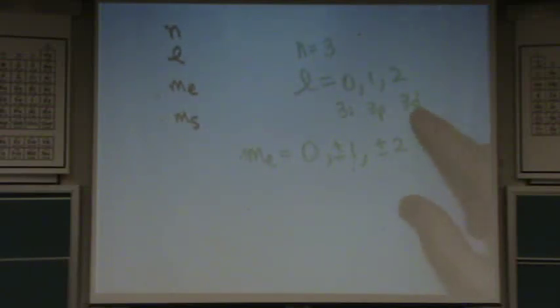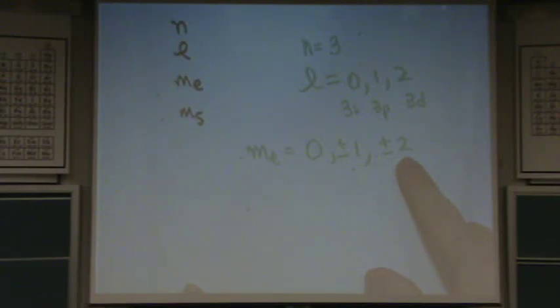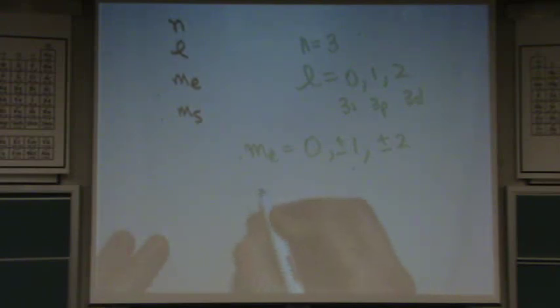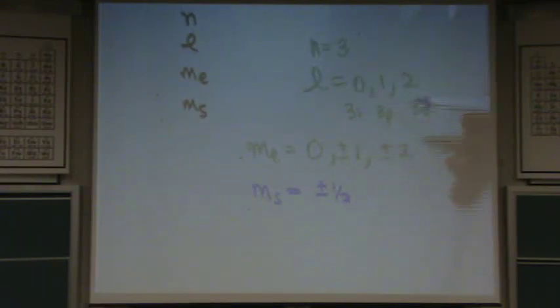How many, if I would have had three D, all these values, there's five values, how many total electrons can go in these orbitals? Ten. Because each of these, I'll write a different color, each of these can have a plus or minus a half.